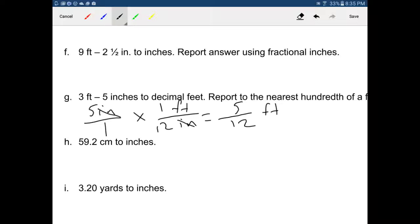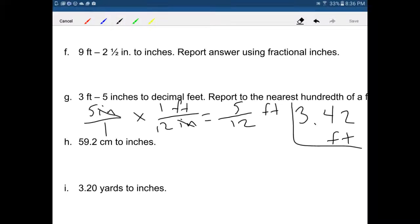But now it wants decimal feet. So I got to go to my calculator, and I have to do five divided by 12, and that is 0.42. So my final answer is 3.42, because I'm to report to the nearest hundredth of a foot. So 3.42 feet. That's a good one.